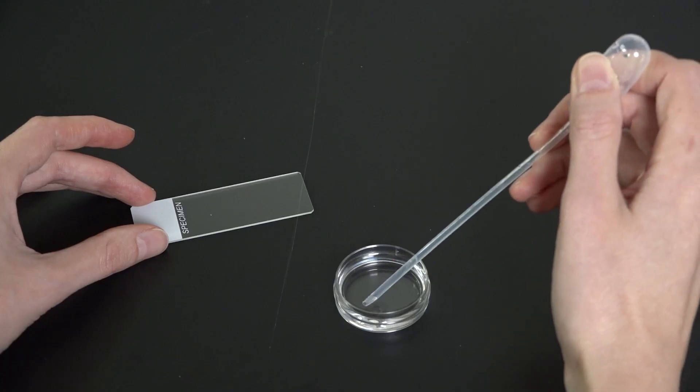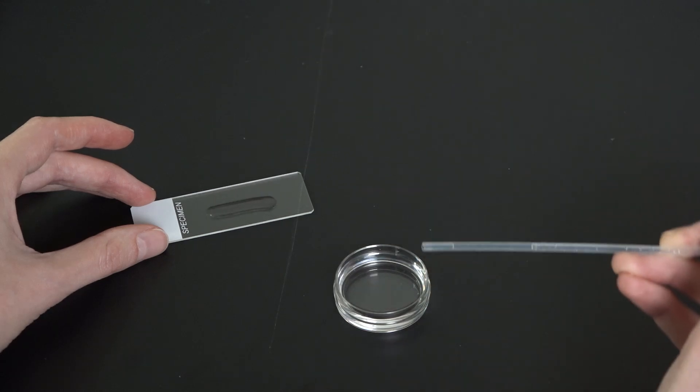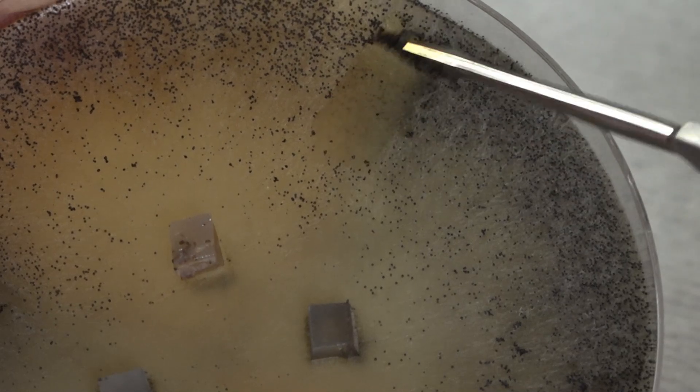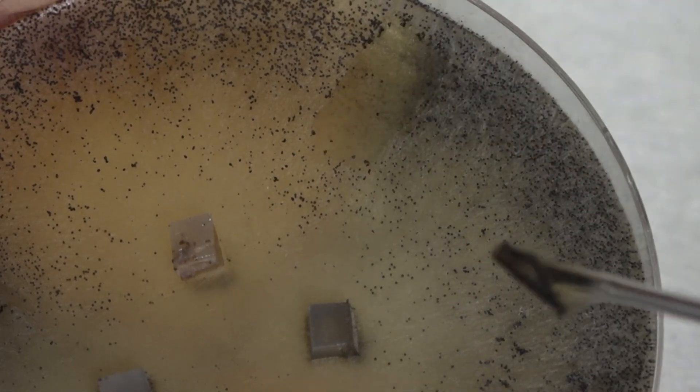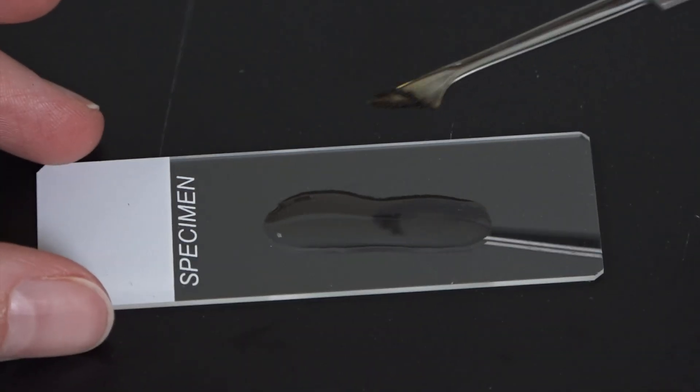I'm going to put a drop of water on my microscope slide and then scrape some perithesia from the Sordaria plate using my scalpel. I'll make sure to scrape where the strains meet on the plate so that I get perithesia that are the result of reproduction between the two. Then I'll transfer the perithesia to the drop of water.